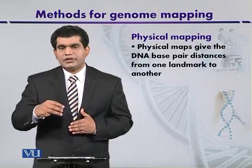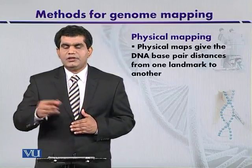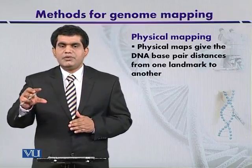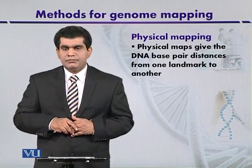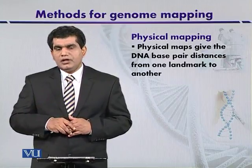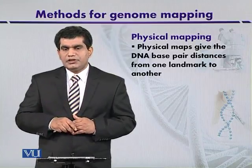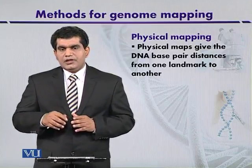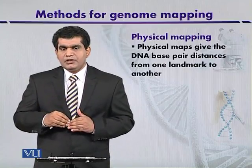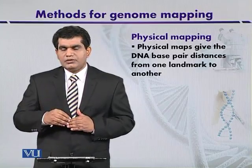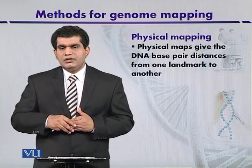Overall, certain clones can act as a starting point to construct physical maps. Additionally, polymorphic sequences within the genome — the basis of restriction fragment length polymorphism (RFLP) — can also be used to construct physical maps. A variety of methods are available, and upcoming lectures will focus mainly on physical maps. It is important to understand the difference between genetic linkage maps and physical maps before proceeding.